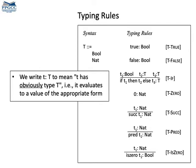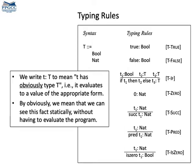For instance, zero colon nat means that the value zero has type nat. And that means that we can know the type of a value without having to evaluate the program.